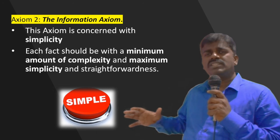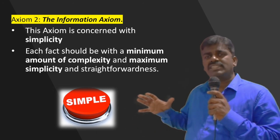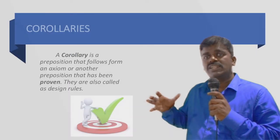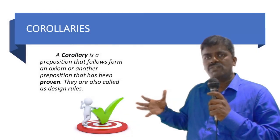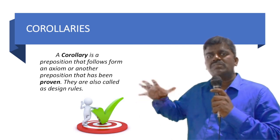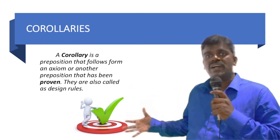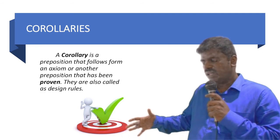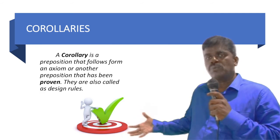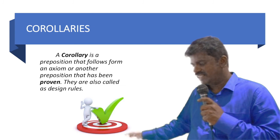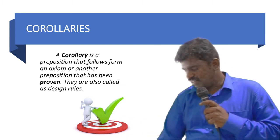So these are all the things about the axiom. It is not proven, but it is like a truth, and we have to use it. And based upon that, we are going to define the corollaries. The corollaries can be proven by the design rules. So that is the definition of corollaries.